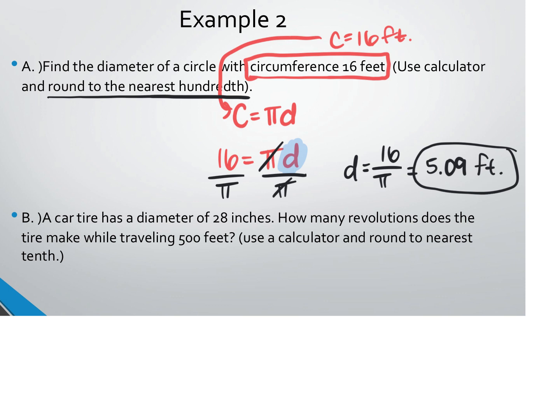If it doesn't say to round, we round to the nearest tenth. But if it says specifically what to round to, you follow that. To find the radius, divide 5.09 by 2, because 2r equals the diameter.